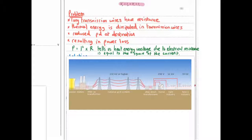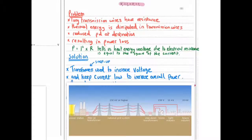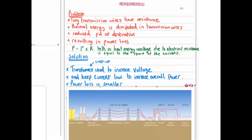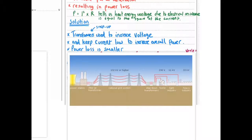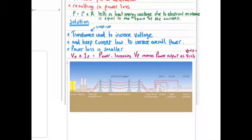That's the problem which is why it's very inefficient. So the solution is use a step-up transformer to increase the voltage and this keeps current low to increase overall power. So power loss is smaller. You must use a step-up transformer for this.